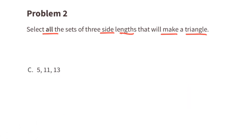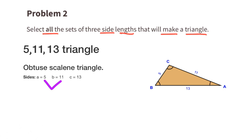For set C with side lengths 5, 11, and 13: the longest side length is 13, so the other two need a sum greater than 13. Since 5 plus 11 is 16 and 16 is greater than 13, these three side lengths will form a triangle.